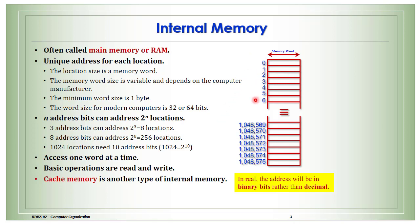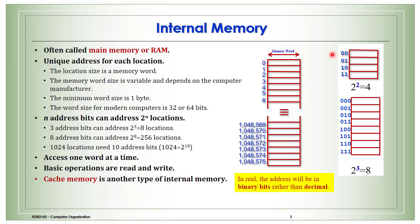How many bits we need for the address depends on this formula: n address bits can address 2 to the power n locations. For example, if two bits are used, they can address 4 locations; if three bits are used, they can address 8 locations. Using eight bits, we can address 2 to the power 8, which is 256 locations.